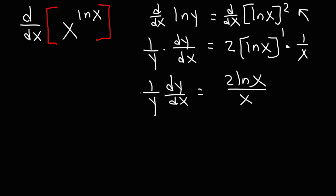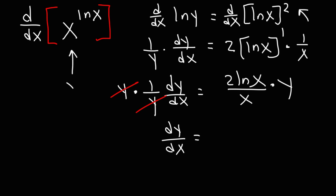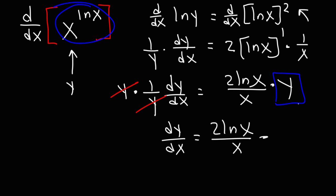Our next step is to multiply both sides by y to get dy/dx by itself. Those two y's cancel, and we have dy/dx is equal to y times 2 ln x over x. But we're not done — remember our original expression is equal to y, so we need to replace y with our original expression. So we have dy/dx equals 2 ln x over x times x raised to the ln x. This is the answer.